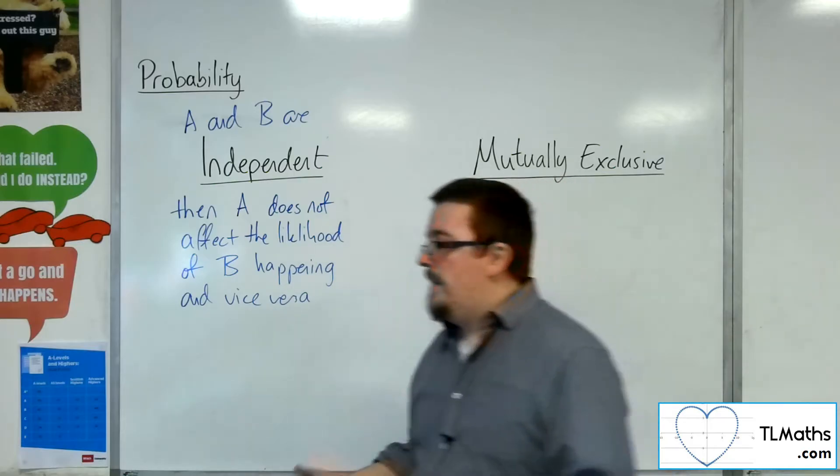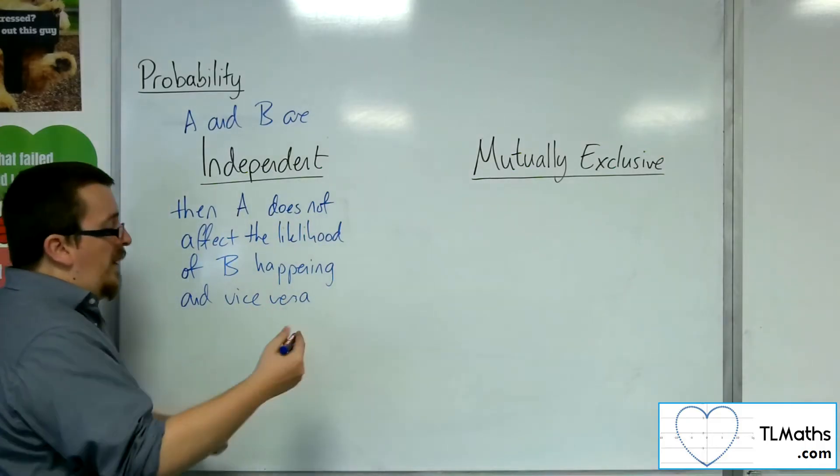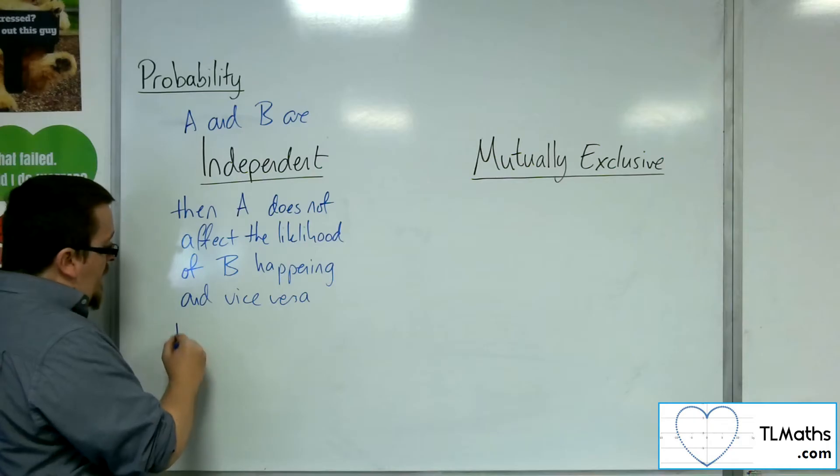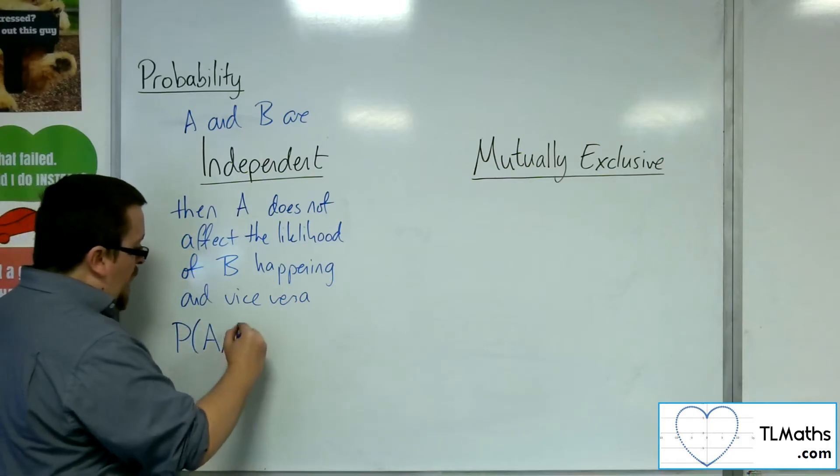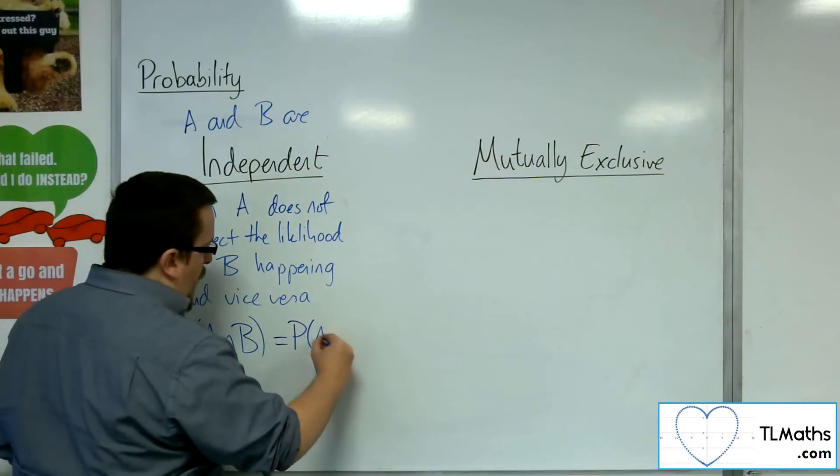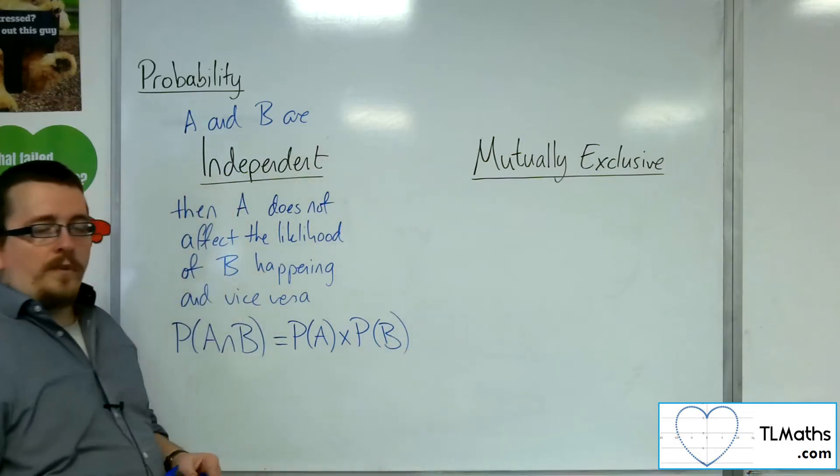That's what we mean by independent events. And subsequently, if those two events are then independent, then what that means is that in order for the intersection to happen, you can multiply the two probabilities together.